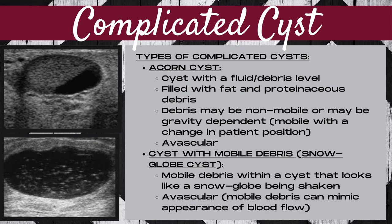There are four types of complicated cysts on a breast ultrasound. The first type is known as an acorn cyst. This is a cyst that's going to have a fluid and a debris level, filled with fat and proteinaceous debris. The debris may be non-mobile or gravity dependent, meaning it's mobile with a change in patient position. An acorn cyst should also be avascular.